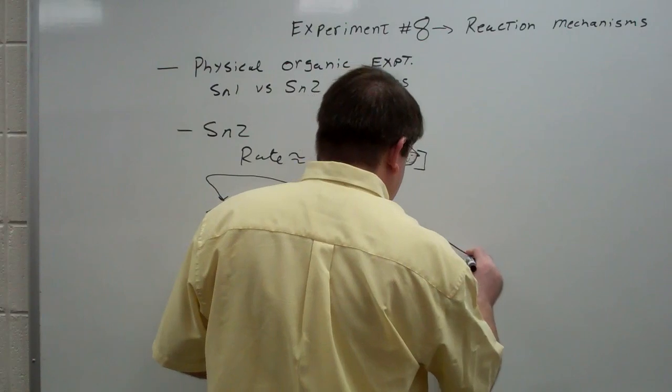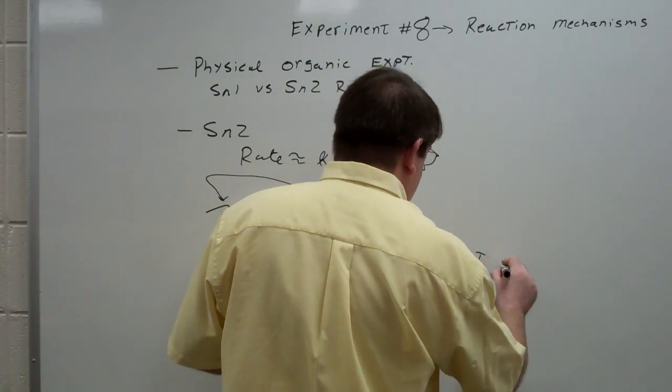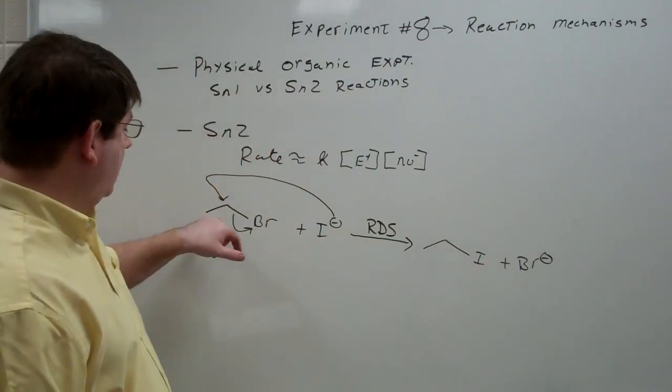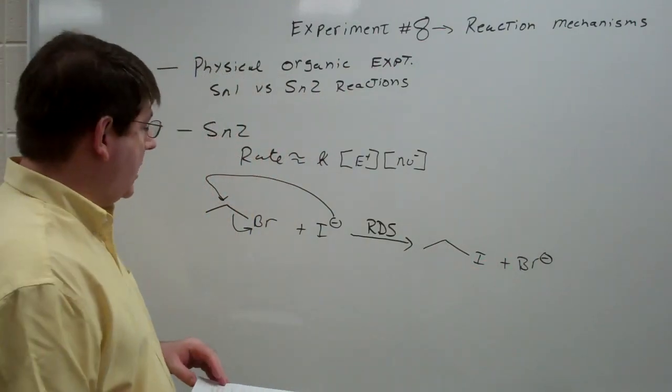And you get the product, iodoethane plus your bromide leaving group, being completely divorced, if you will, from the organic part that it was originally attached to.